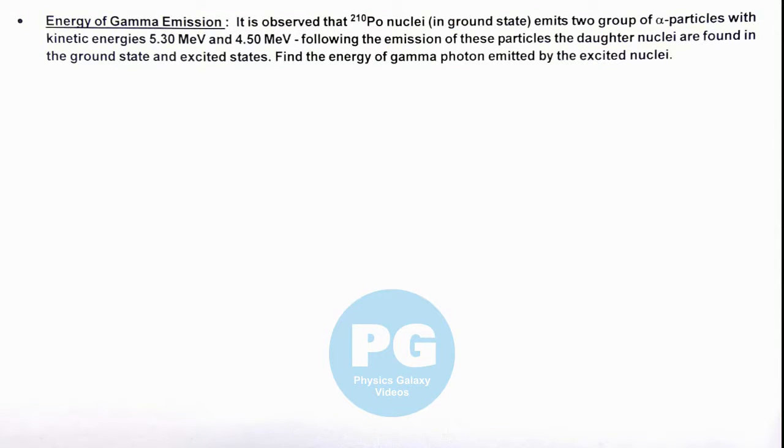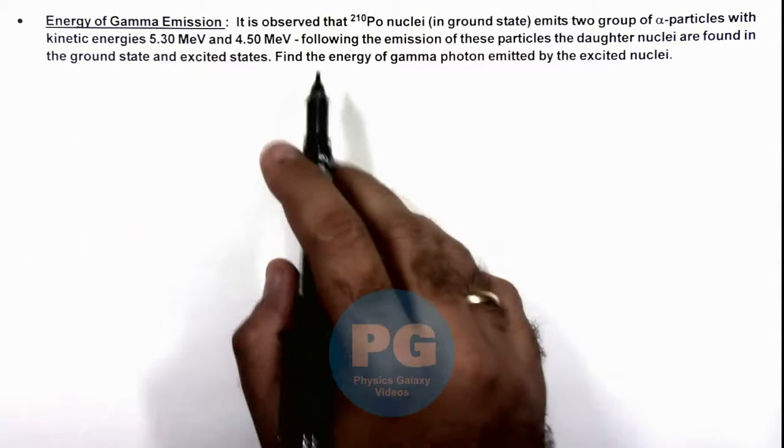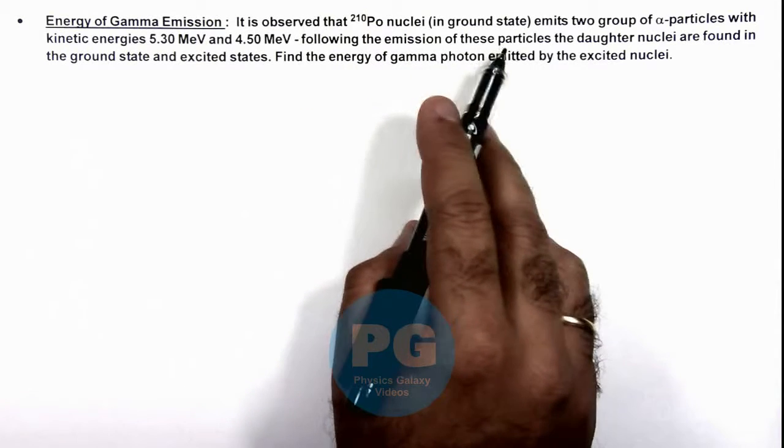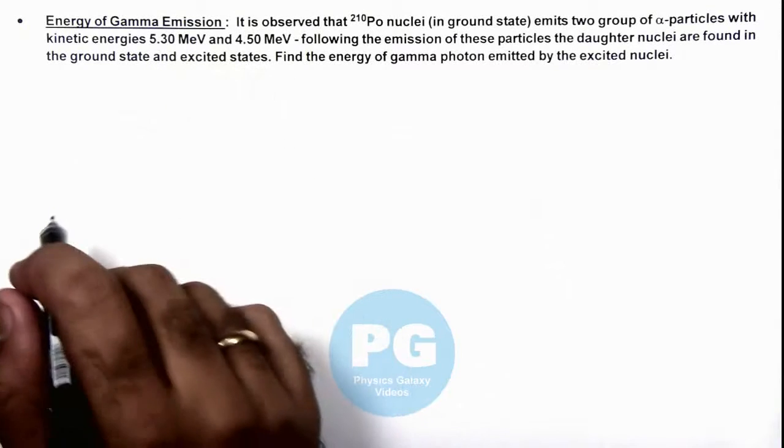In this illustration, we'll study the energy of gamma emission. It is observed that polonium nuclei in ground state emits two groups of alpha particles with kinetic energies 5.3 and 4.5 MeV.